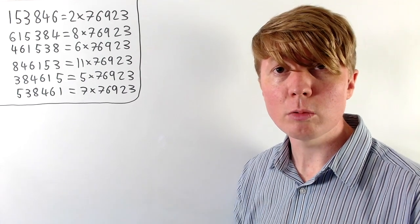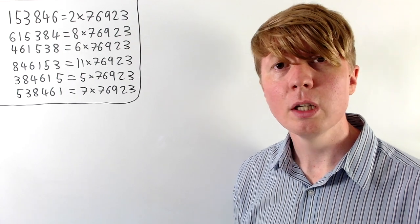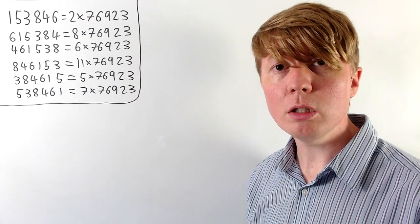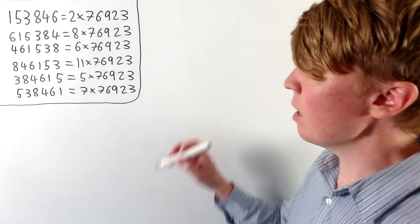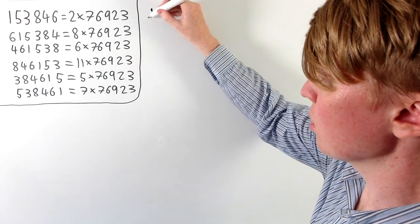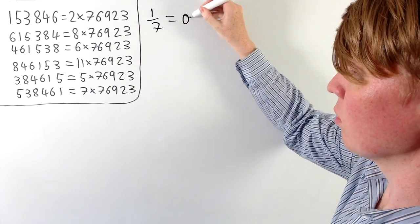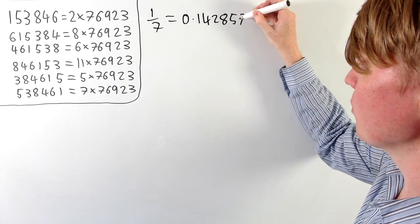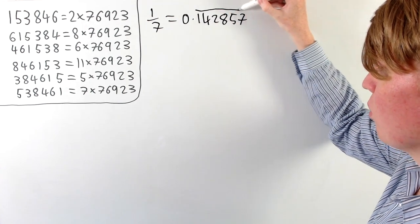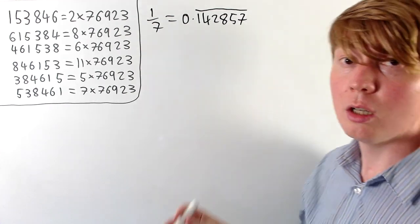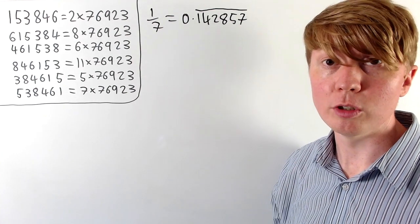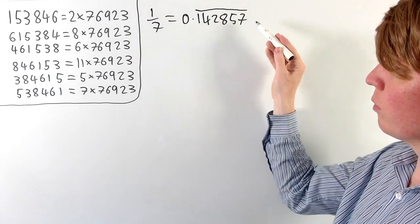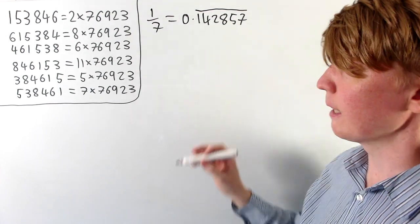We'll start off with a slightly simpler example, and this is all to do with recurring decimals. We'll start with the fact that 1/7 has a nice recurring decimal structure of 0.142857, then this will all repeat — 142857 — and so on forever. We use a bar to denote that all of those digits are repeating.